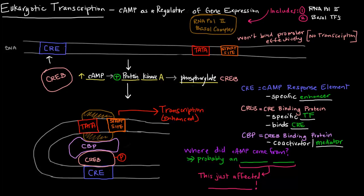But where did the cyclic AMP come from? It probably came from an extracellular signal. We talked about how G-protein coupled receptors increased the concentration of cyclic AMP through adenylate cyclase — that increased cyclic AMP was because of some hormone binding event. So if this extracellular signal caused an increase in cyclic AMP, this is how an extracellular signal can cause a change in transcription. Certain extracellular signals trigger their responses by altering transcription.